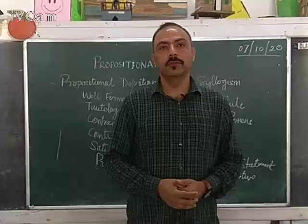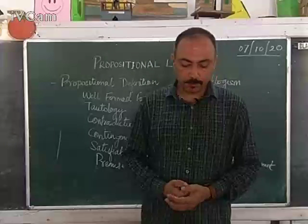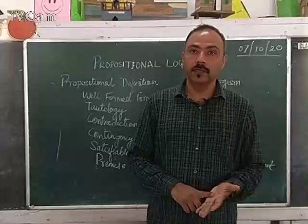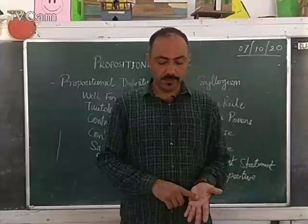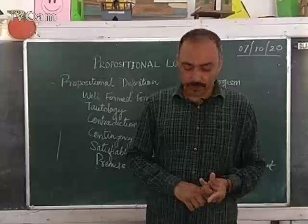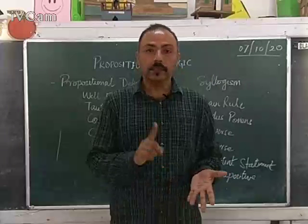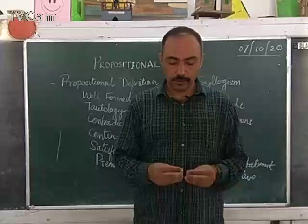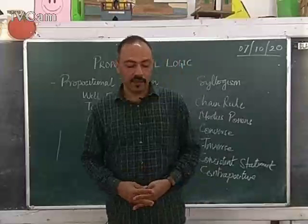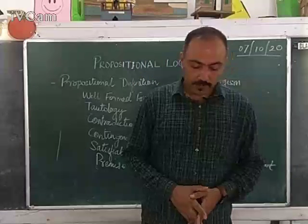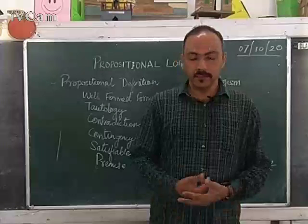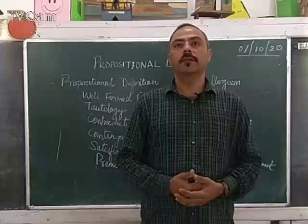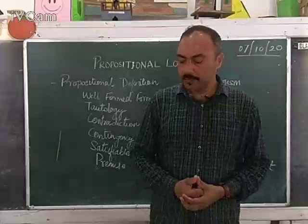If P is a WFF, then P-dash (negation of P) is also a WFF. If P and Q are WFF, then these four symbols — the connectives — are used to make a WFF. Any expression other than these is not formed as a WFF.